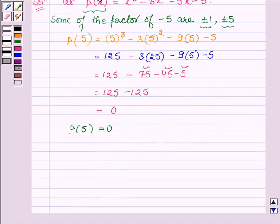On replacing x by 5 we get the value of the polynomial as 0. So, this implies x minus 5 is a factor of P(x).